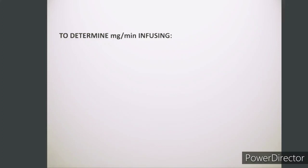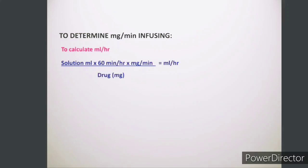The next formula is to determine ml per hour when dosing is in mg per minute. If the doctor has prescribed how many mg per minute to administer to the patient, we can determine at what rate to set the syringe pump. The formula is: solution in ml (in which the medicine is diluted) multiplied by 60 minutes per hour — or 60 multiplied by the number of hours if administering over multiple hours — multiplied by mg per minute (the dose prescribed by the doctor) divided by the stock dose in mg. This gives the rate in ml per hour.